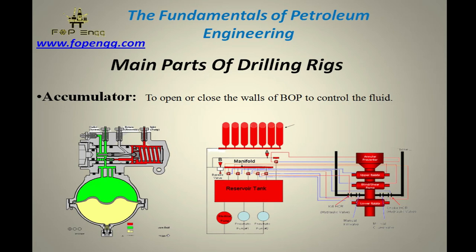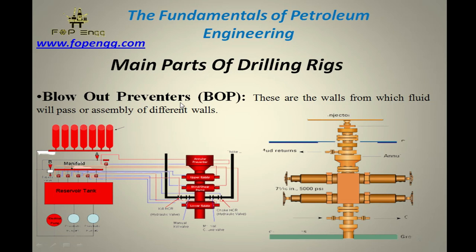Blowout preventer — this is the BOP. These are the valves through which fluid will pass, or we can call it an assembly of different valves. These are the valves from which the fluid will pass, or we can say that we can control the well from the BOP. The BOP is the main source from which we can control the well.